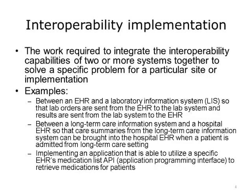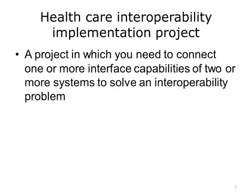Another example is implementing an immunization reporting interface between a hospital and the local public health authority, so that the public health authority is notified whenever the hospital immunizes a patient. A healthcare interoperability implementation project is one in which you need to connect one or more interface capabilities of two or more systems to solve an interoperability problem.